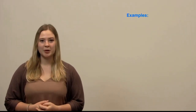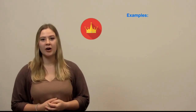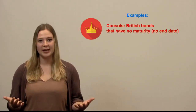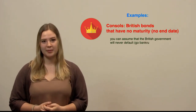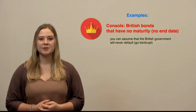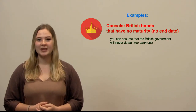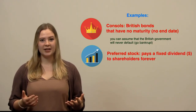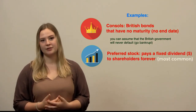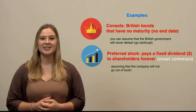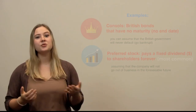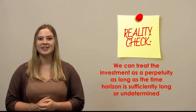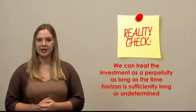We don't see many real-life examples of perpetuities, but some notable ones are consols, which are British bonds that have no end date or maturity date, meaning that for as long as you own it, you'll receive a fixed payment. A second example is preferred stock — stock that pays a fixed dividend or capital cash payment to shareholders forever, or for as long as the company is still in business. Nothing truly goes on forever, but as long as the time horizon is sufficiently long and undetermined, we can treat the investment as a perpetuity.